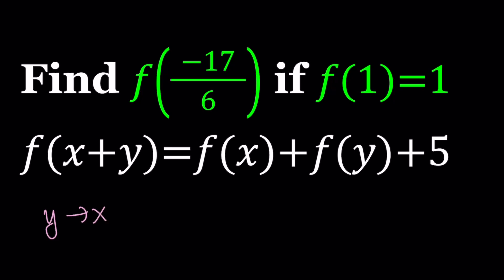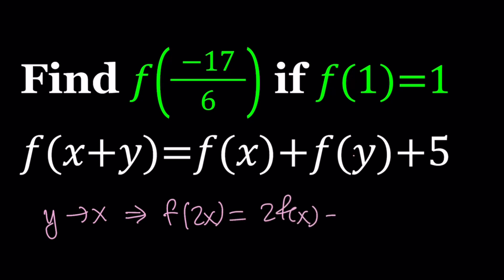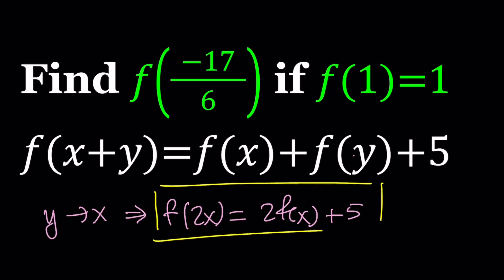If you do that on both sides, this is going to give you f of 2x equals f of x plus f of x, which is 2f of x plus 5. This is something we're going to use to double our inputs, because we're going to do that a few times.